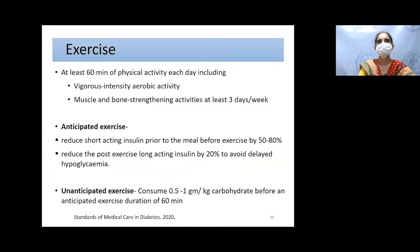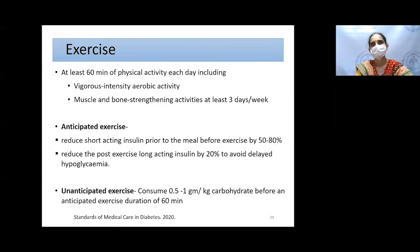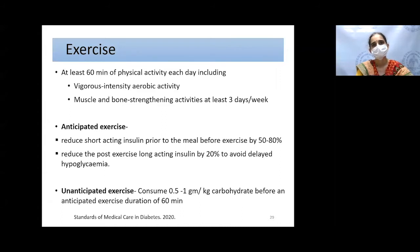Physical exercise is also required in type 1 diabetes: vigorous-intensity aerobic activity daily, plus muscle and bone strengthening at least three days per week. For anticipated exercise—such as a regular swimming class—reduce short-acting insulin by 50 to 80% prior to exercise. After exercise there is risk of delayed hypoglycemia due to increased glucose uptake by muscles; hence also reduce long-acting insulin by 20%. For unanticipated exercise, check glucose, ensure it is between 100 and 220, and if low, consume 0.5 to 1 g/kg carbohydrate for 60 minutes of exercise.